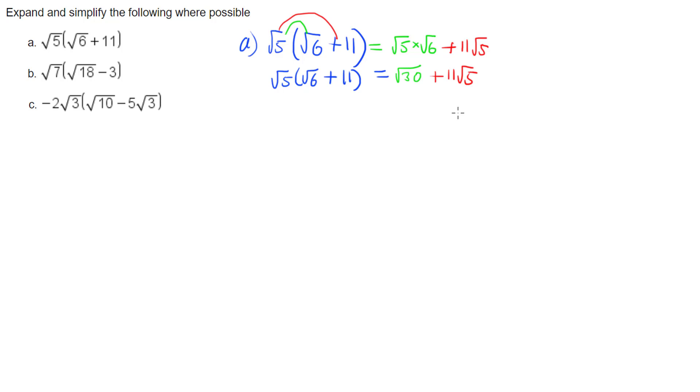Looking at part b, we have the square root of 7 multiplied by the square root of 18 minus 3. So multiply the root 7 onto the root 18, giving root 7 times root 18. And then root 7 times negative 3 gives us negative 3 root 7.